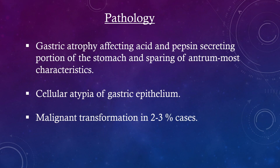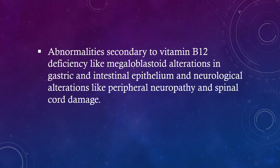Pathology. Gastric atrophy affecting acid and pepsin secreting portion of the stomach, with sparing of the antrum — most characteristic. Cellular atrophy of gastric epithelium. Malignant transformation in 2–3% of cases. Abnormalities secondary to vitamin B12 deficiency like megaloblastoid alterations in gastric and intestinal epithelium, and neurological alterations like peripheral neuropathy and spinal cord damage.